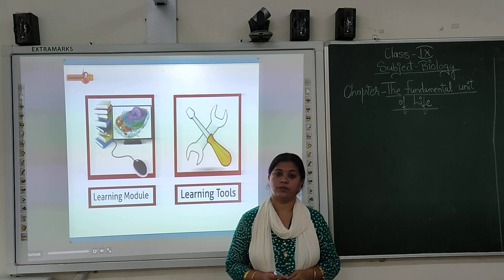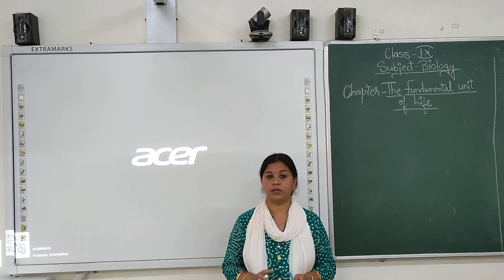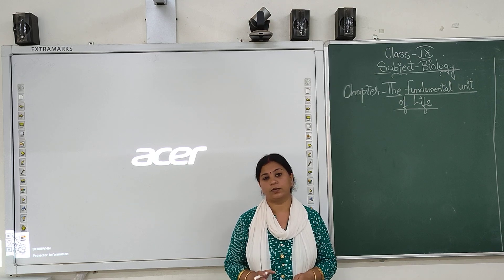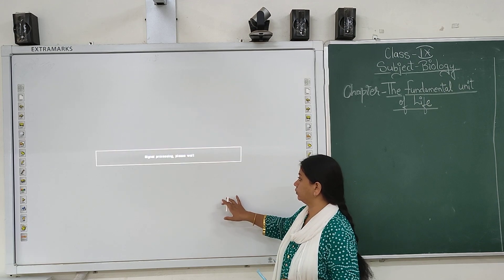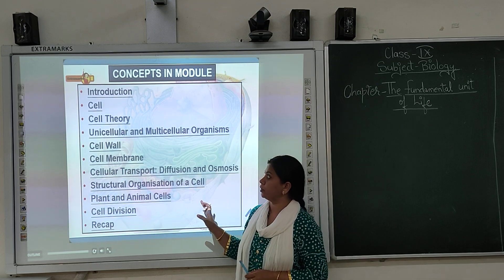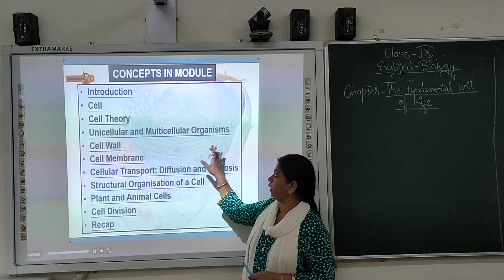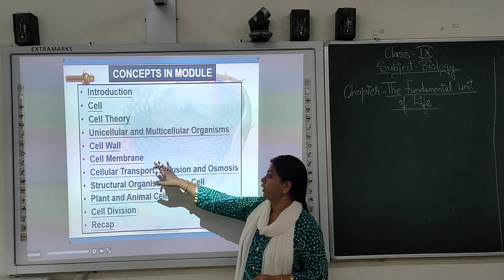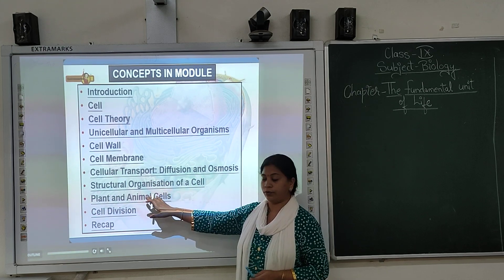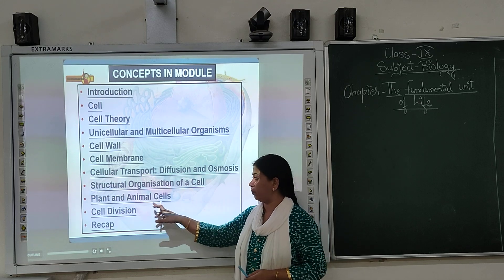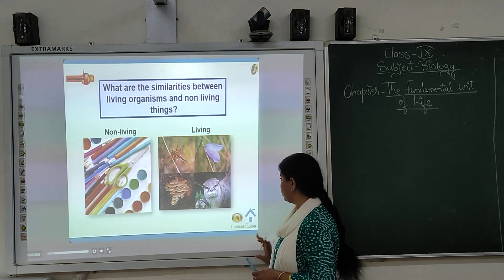The 9th class science biology first chapter is the fundamental unit of life. In this chapter we will study the basic structural and functional unit of life, which is called the cell. We will cover the introduction to the cell, cell theory, unicellular and multicellular organisms, cell wall, cell membrane, cellular transport, diffusion and osmosis, structural organization of the cell, and different organelles and structures of plant and animal cells.